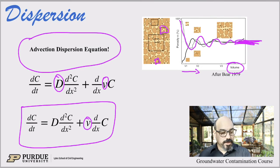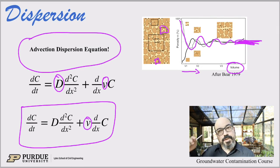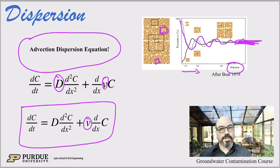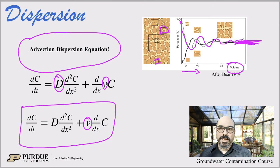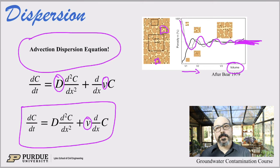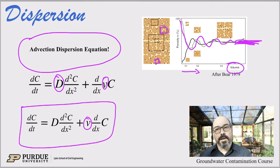So this concludes the introductory lectures on diffusion, then advection, and then dispersion. In the next series of lectures, we will see how we can solve the advection-dispersion equation, find the analytical solution, and then use it in transport problems in aquifers.